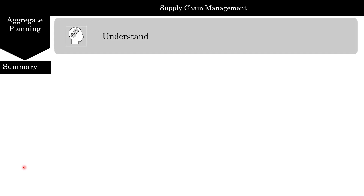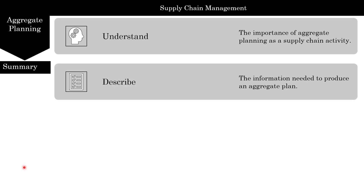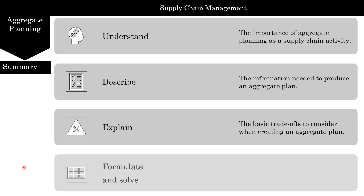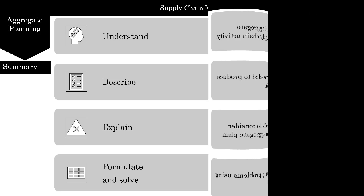In summary, we looked at the aggregate plan and understood the importance of aggregate planning in supply chain activity. We described the information needed to produce an aggregate plan, explained the basic trade-offs to consider when creating an aggregate plan, and formulated and solved an aggregate plan in Excel. Thank you for listening. After this, we go to the next chapter, which is sales and operations planning.